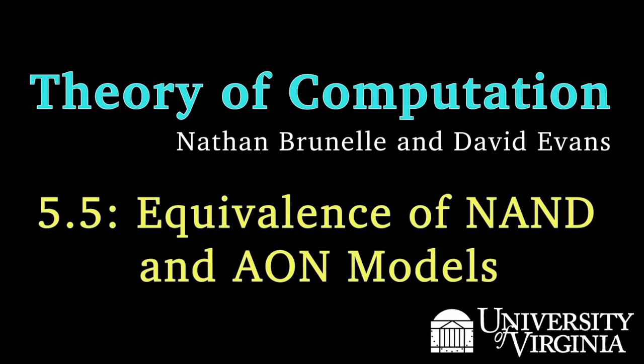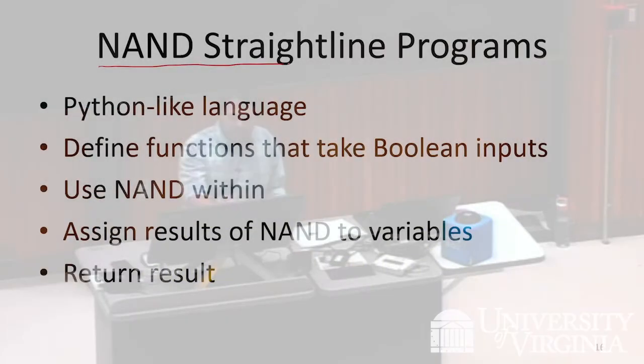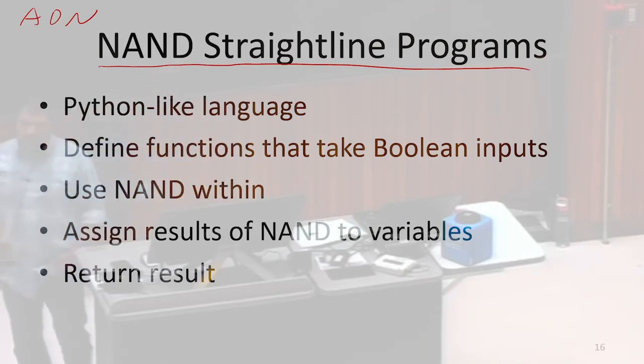Let's say that I wanted to define a new programming language. Before we had the AND, OR, NOT programming language, so the operations we were allowed to use were AND, OR, or NOT. Let's say that I restricted this to being only NAND. We're no longer allowed to use AND, OR, or NOT. We're only ever allowed to use NAND.